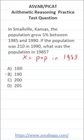We know its population in 1990 is 210 people. That's going to be equal to its population in 1985, which is X, plus a 5% growth in its 1985 population.